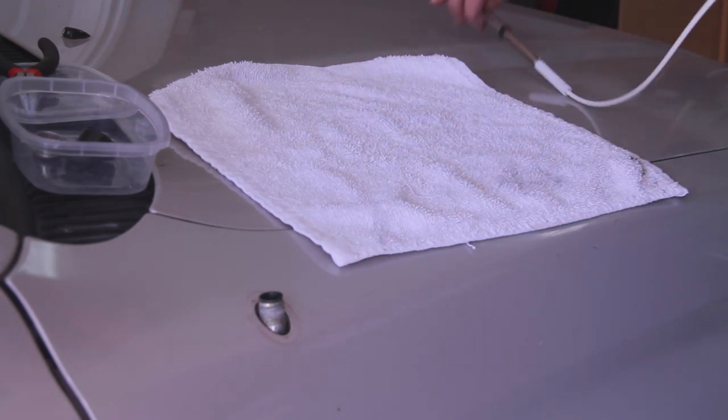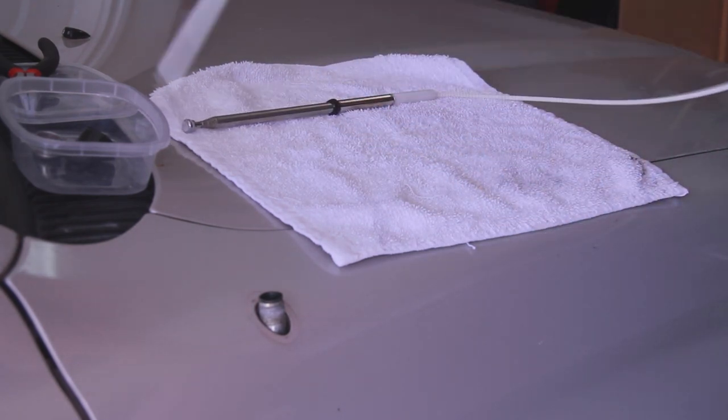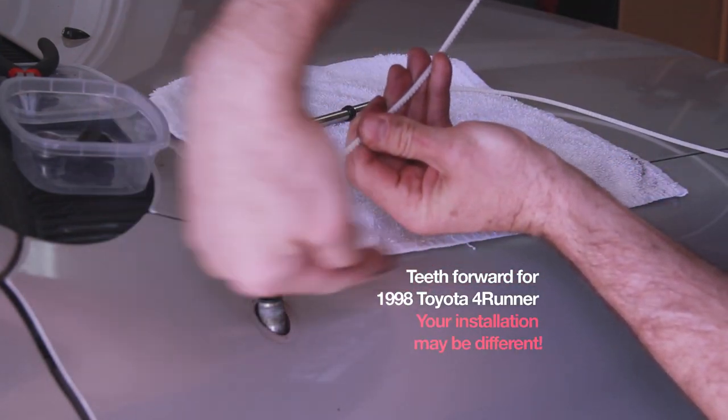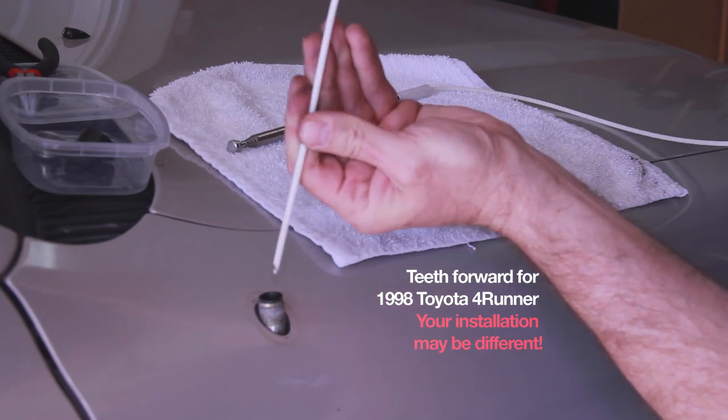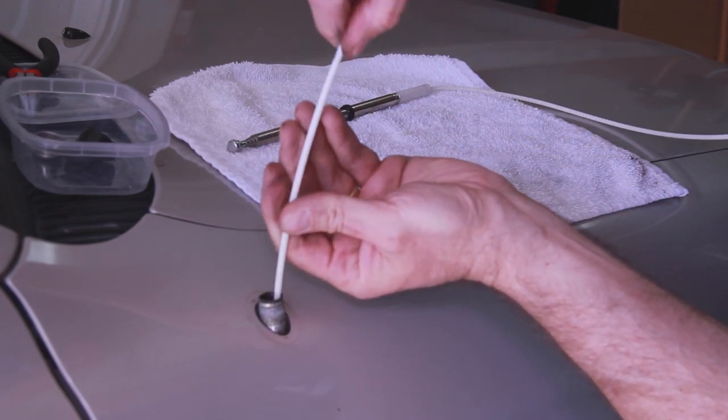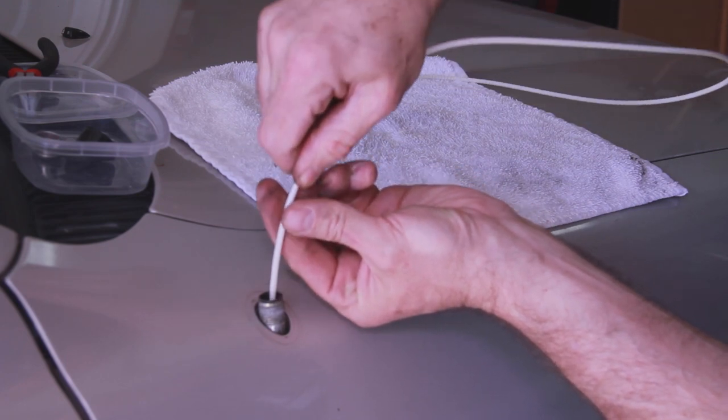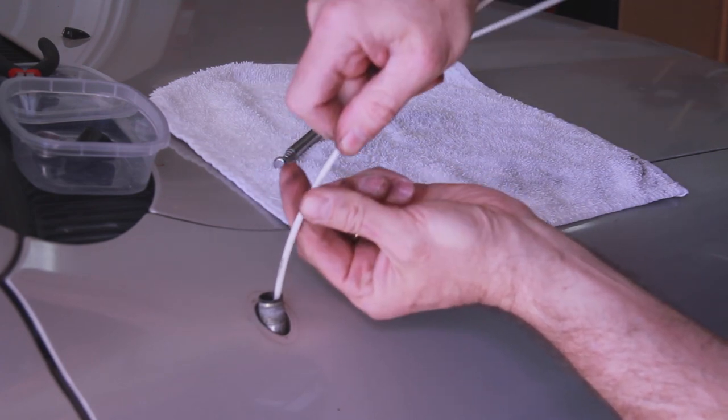Threading in the new cable simply involves laying down the new antenna. Thread that cable in, making sure that the teeth are facing in the same direction as they came out. In my situation, they face forward. As you thread that cable all the way down, it's going to engage a gear down there that's on a motor. It'll come to a stop.